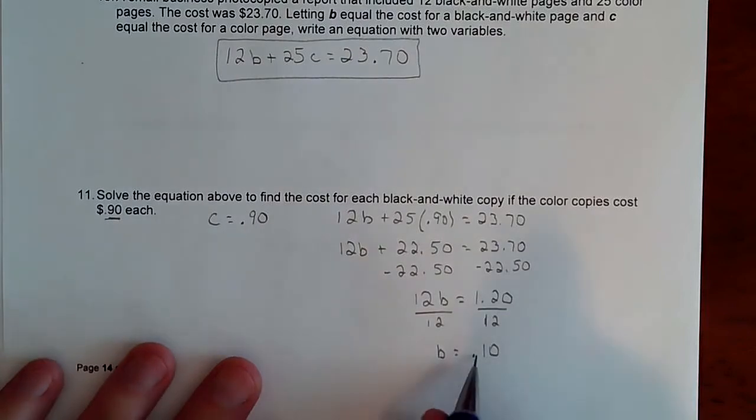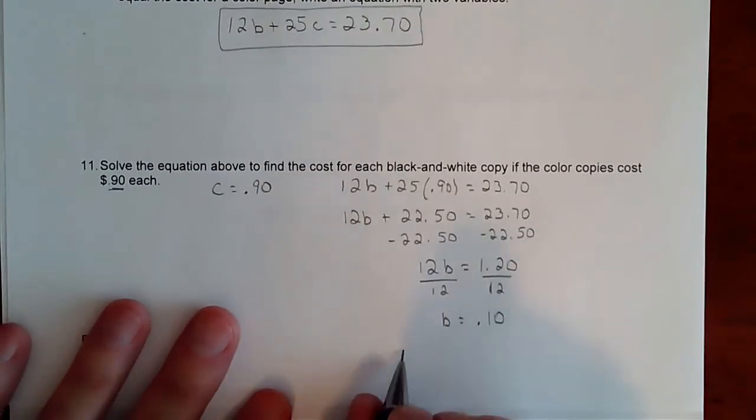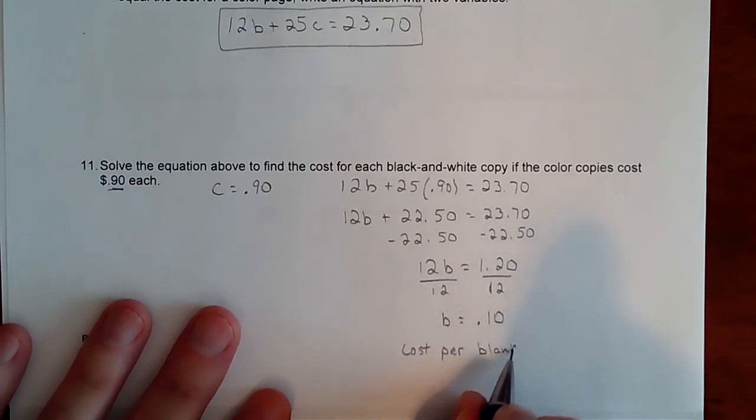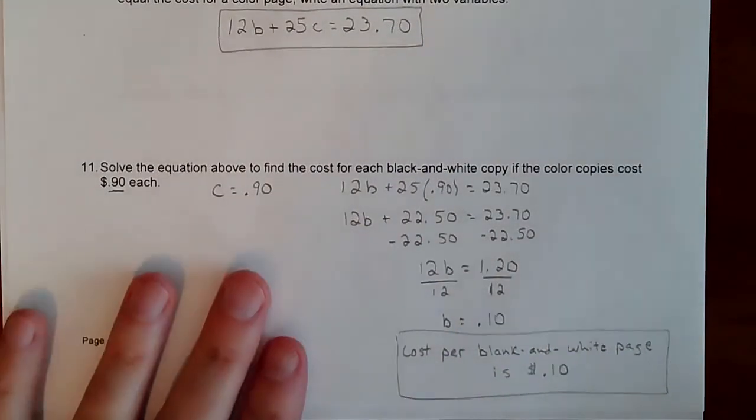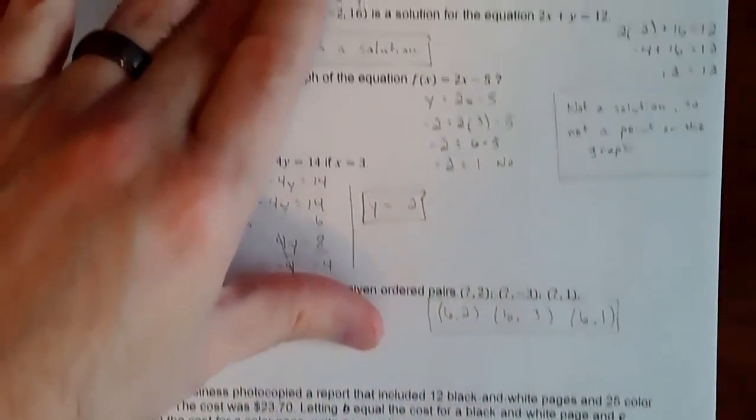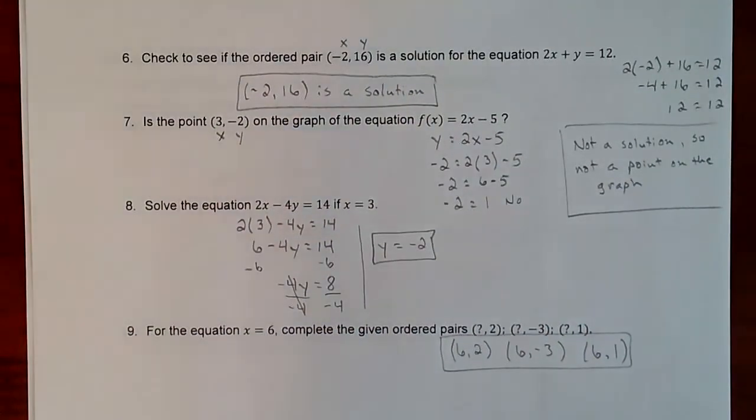So the black and white is costing, if you throw that into a calculator, you're going to get 0.10, 10 cents. And well, 0.1 actually the calculator is going to give you, but that represents 10 cents. So your cost per black and white page is 10 cents. 0.10, 10 cents. Perfect. Okay. And that was kind of finding solutions and verifying coordinates are solutions, which means there are points on a graph.